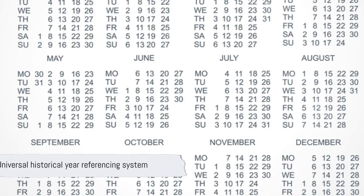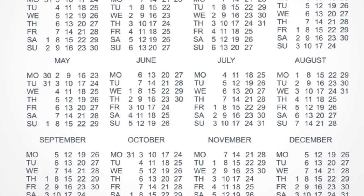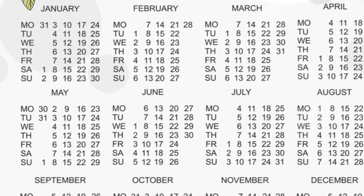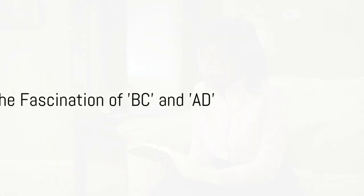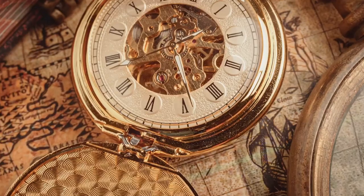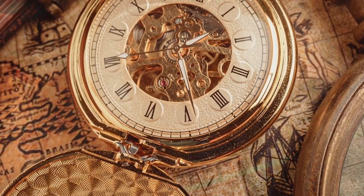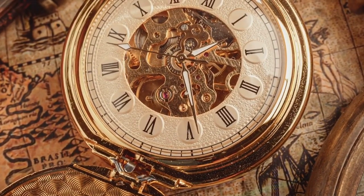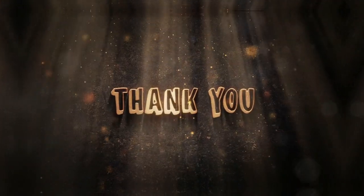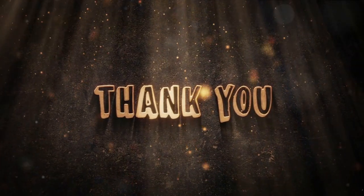The use of these terms provides a universal system for referencing years, facilitating historical record keeping and analysis. So the next time you come across these abbreviations, you'll not only know what they stand for, but also understand their significance in our calendar system. It's fascinating how these two little abbreviations — BC and AD — play such a crucial role in how we perceive and record time.